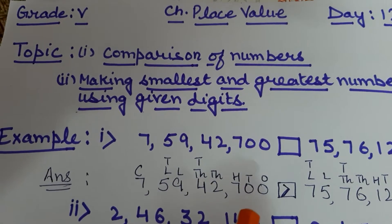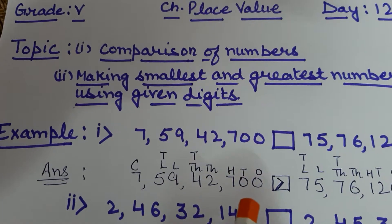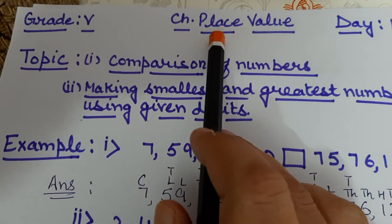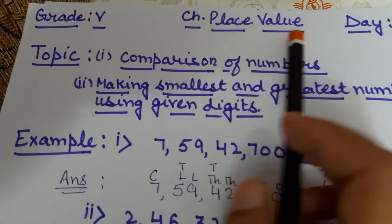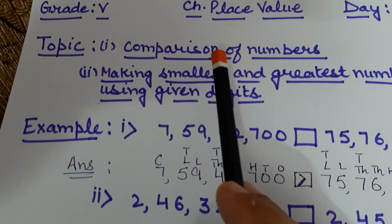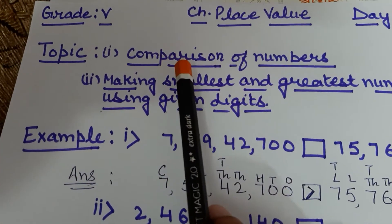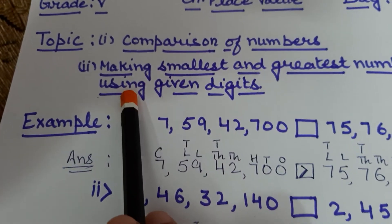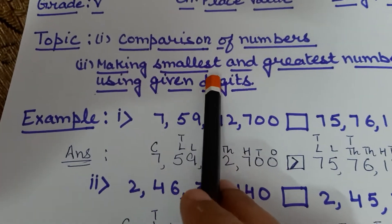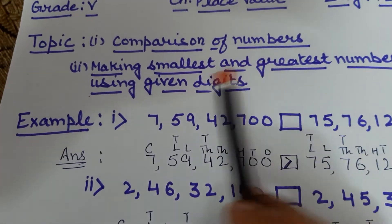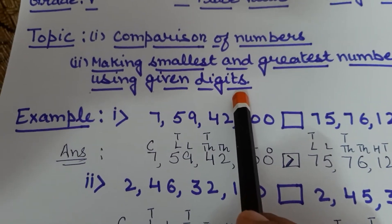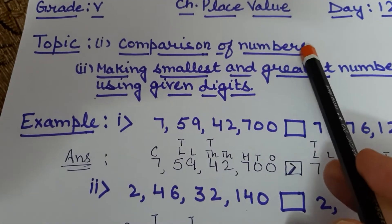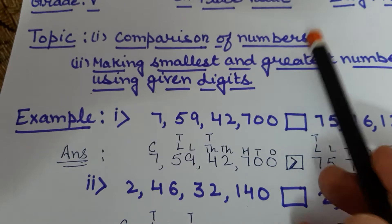Hello students, hope you all are fine. As you know we are doing the place value chapter. Today we will discuss two topics: first is comparison of numbers, and second is making the smallest and greatest numbers using given digits.